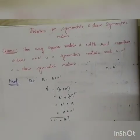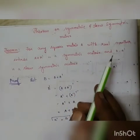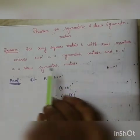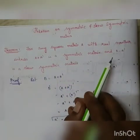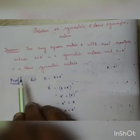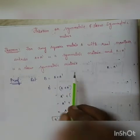Therefore, we can say that for any square matrix with real entries, A plus A transpose is a symmetric matrix and A minus A transpose is a skew symmetric matrix.